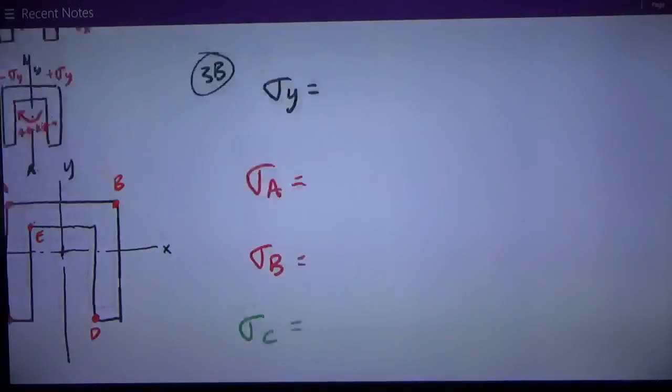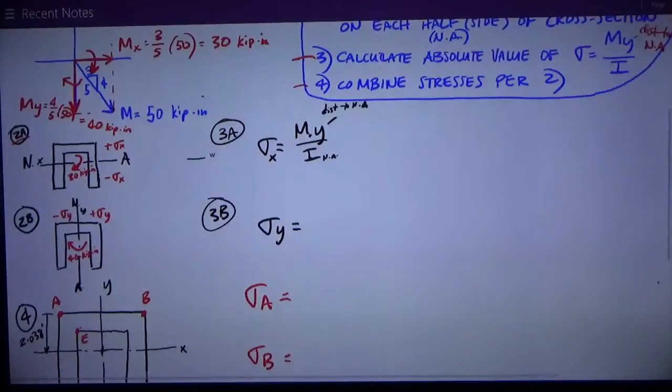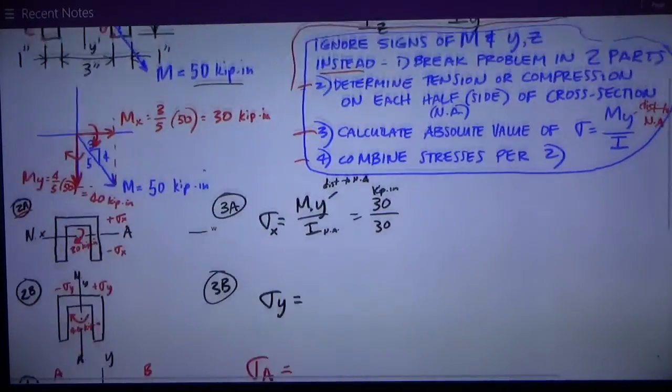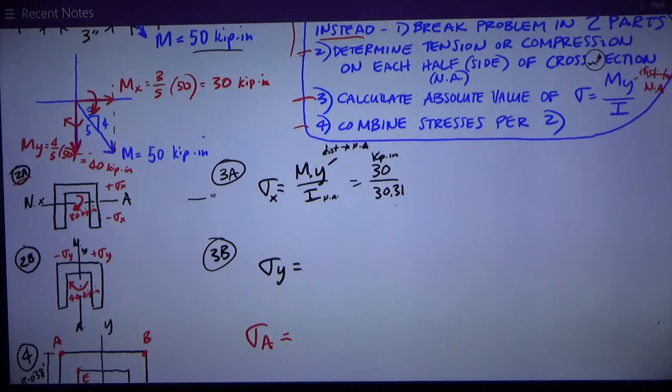For sigma x, I've determined that the moment from the step above is 30 kip-inches. The I from above is 30.31 inches to the fourth. In every case, I'm just multiplying by the distance to the neutral axis y, which is in inches. I've got kip-inches squared on the top divided by inches to the fourth, so that gives me kips per square inch, which is what I want because it's a stress. And so I can just express this as plus or minus, which I determined from step two, 0.99y ksi.